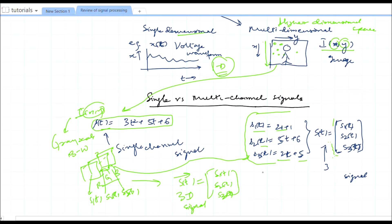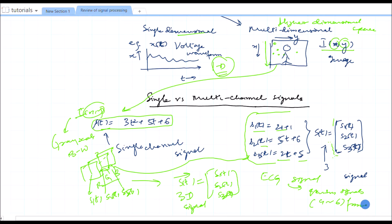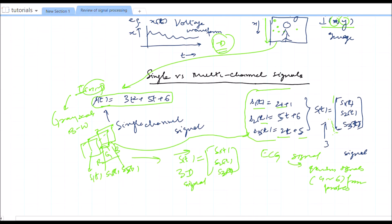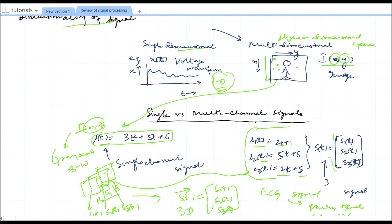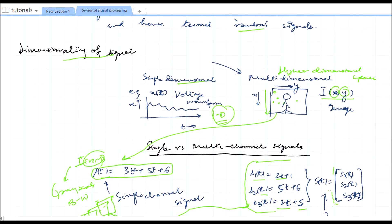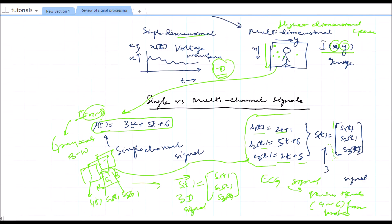Another example of a multi-channel signal is the ECG signal, which consists of various signals, typically 3 or 12. This was the simple review for the first session. I will be resuming it in the next video. Thank you.